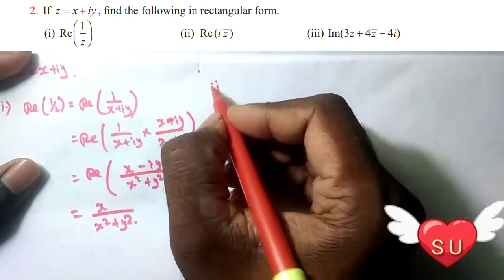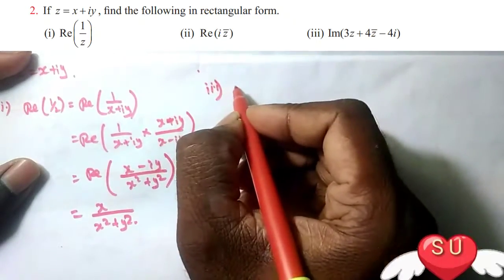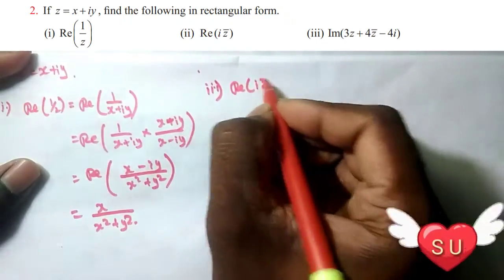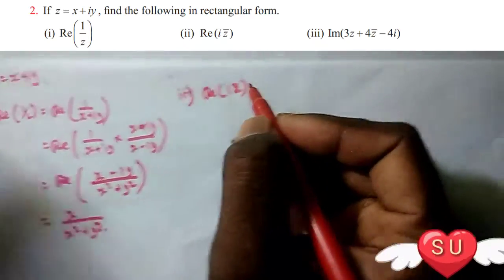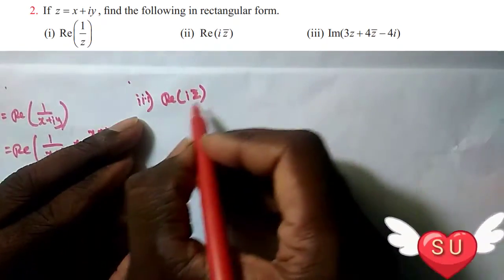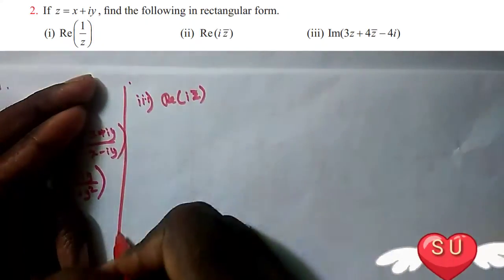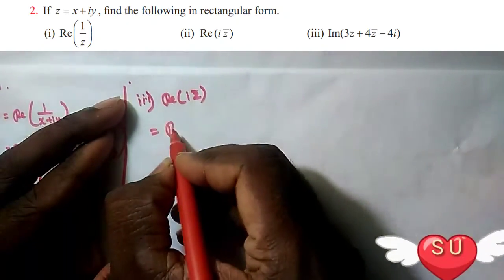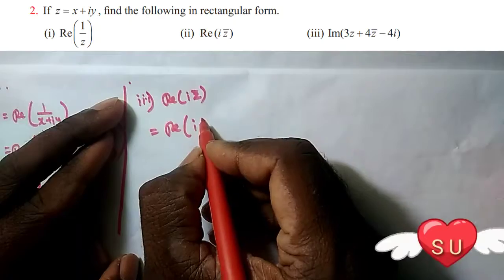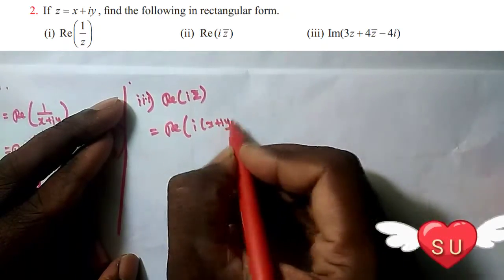Second question: find the real part of i times Z̄. So, real of i·Z̄ — we need to find it. Z̄ is the conjugate, so Z̄ equals X minus iY. We take the real part of i times X plus iY bar.